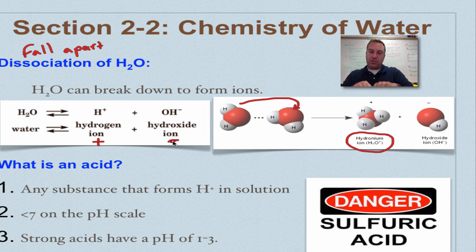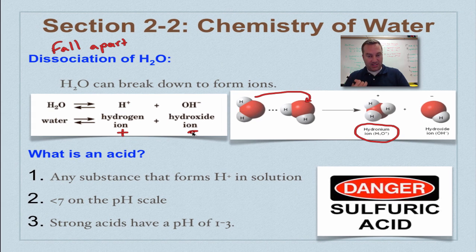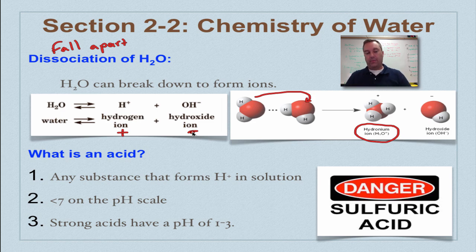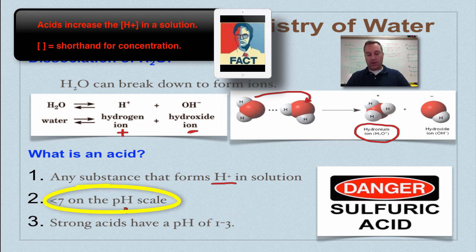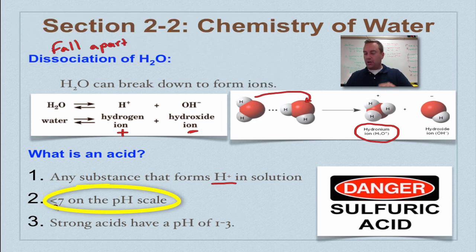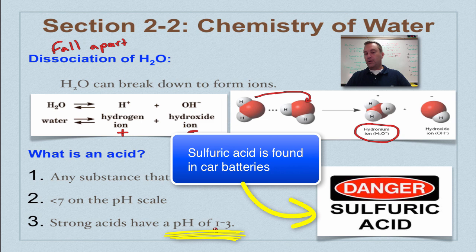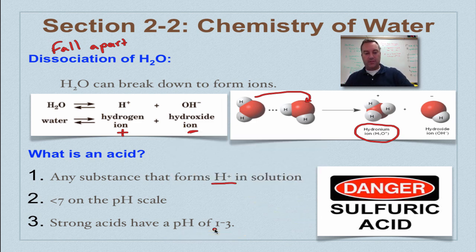Now, when we have this dissociation of water, that can lead to two types of substances, either an acid or a base. We're first going to learn about acids. An acid is anything that forms a lot of hydrogen ions in a solution. Now, on a pH scale, that's anything less than seven. We'll talk about the pH scale here in a little bit. Strong acids have a pH of one to three. This would be like lemon juice, stomach acid, etc. Those are very, very acidic.